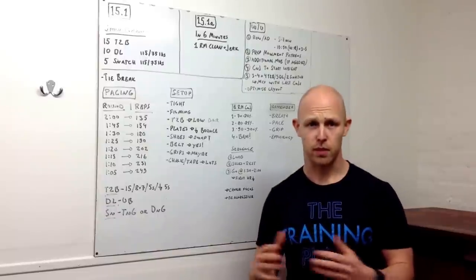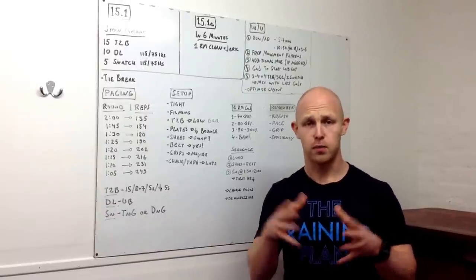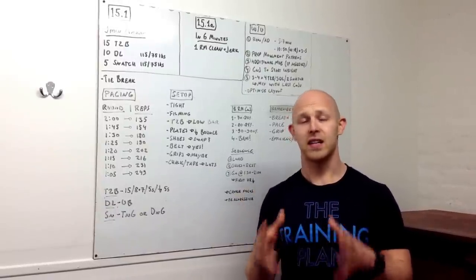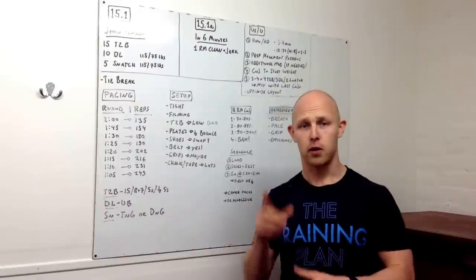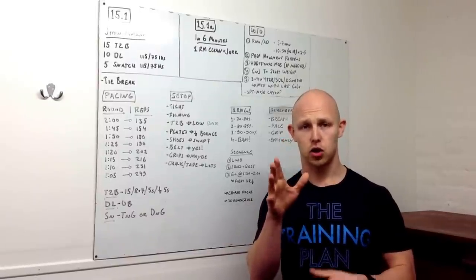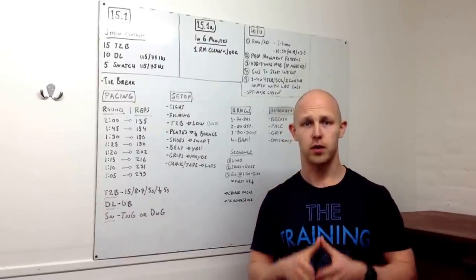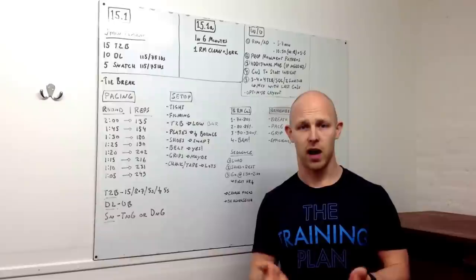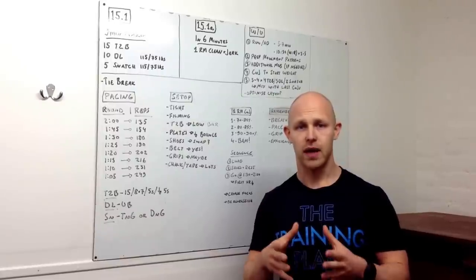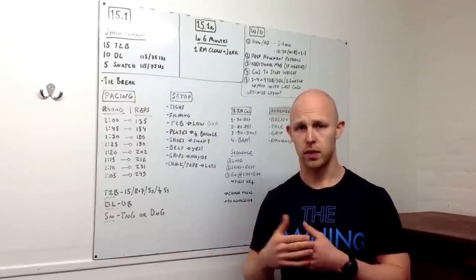On the shoes, some of you will want to swap the shoes from 15.1 to 15.1A. That's going to be absolutely fine if you want to go for a weightlifting shoe. On the first piece, choose the lightest shoe you can choose. It's going to be all about the toes-to-bar, so you want to have light load in there. If you want to swap, there's going to be a time to swap them.